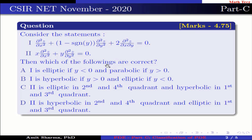Then which of the following are correct? Option A: Statement one is elliptic if y < 0 and parabolic if y > 0. Option B: Statement one is hyperbolic if y > 0 and elliptic if y < 0. Option C: Statement two is elliptic in the second and fourth quadrants and hyperbolic in the first and third quadrants. Option D: Statement two is hyperbolic in the second and fourth quadrants and elliptic in the first and third quadrants.